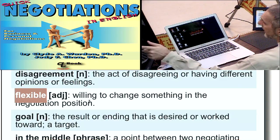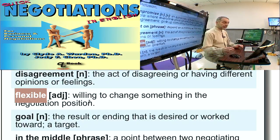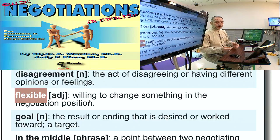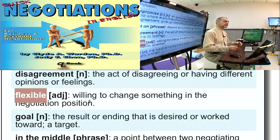Flexible. When we have a negotiation, we often think about being flexible, which here means that you can change your position. We often use this word to ask the other side to please be flexible: could you please be more flexible? Or: I'm being very flexible — why don't you be flexible? Meaning you can change your position.